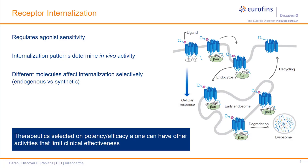Thus, therapeutics that are tested only for their ability to activate downstream signaling events may exhibit differences in vivo due to other receptor activities, such as receptor internalization, which may in turn affect receptor localization that limits or enhances its signaling activity.